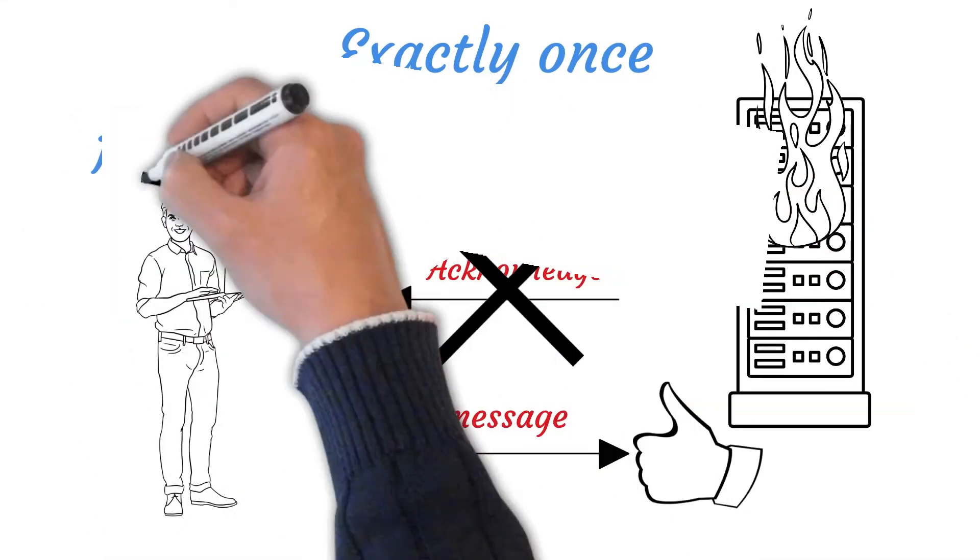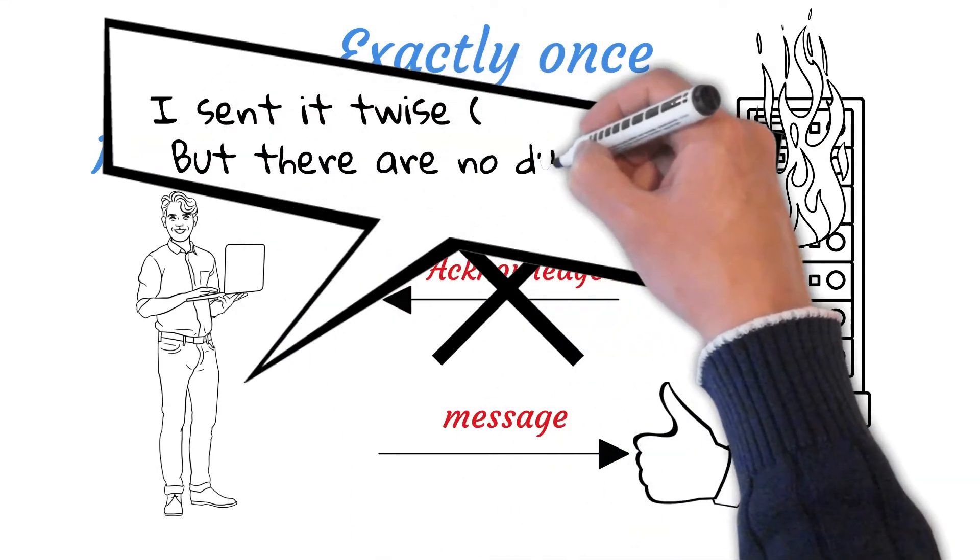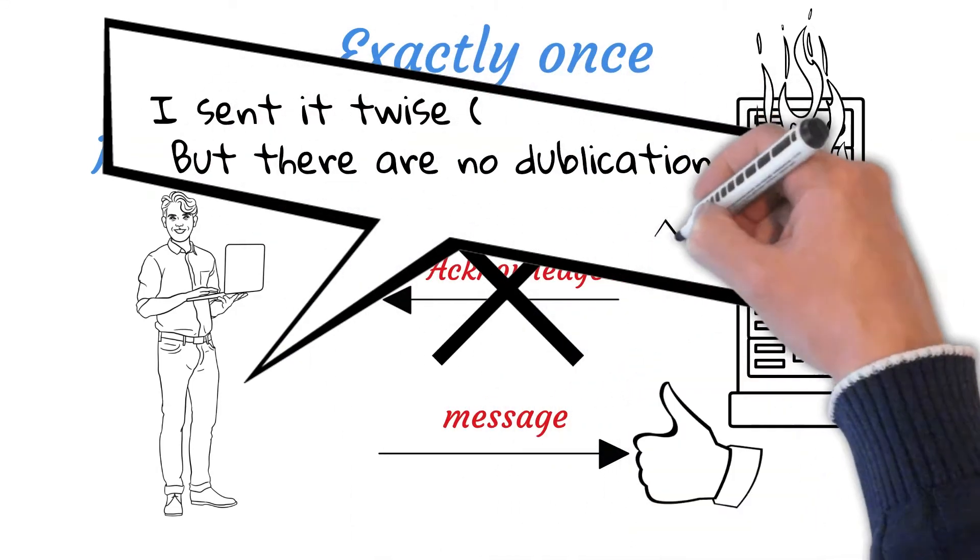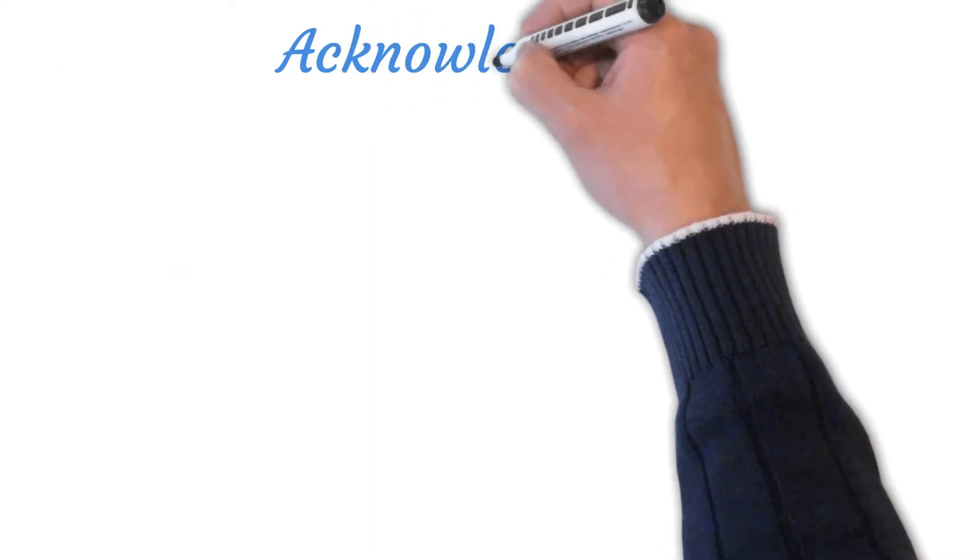That being said, exactly once delivery is the only configuration that can guarantee no events will be missed or duplicated. This is necessary for many use cases with business critical data such as financial applications.